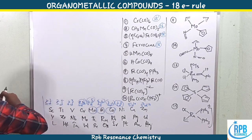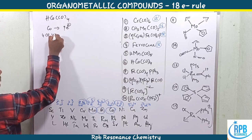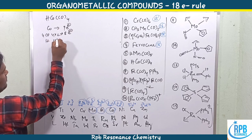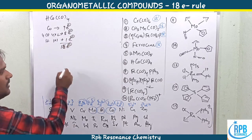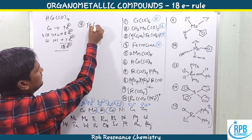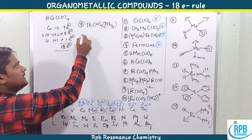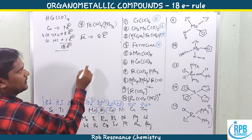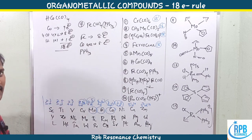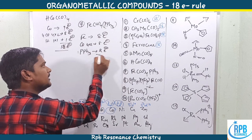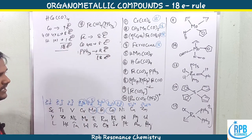The sixth example is HCo(CO)₄. Cobalt has s²d⁷ — 9 electrons. Four carbonyls: 4 × 2 = 8 electrons. One hydrogen: 1 electron. Total: 9 + 8 + 1 = 18 electrons. The seventh example is Fe(CO)₄(PPh₃). Iron — 8 electrons. Four carbonyls: 8 electrons. PPh₃ is a phosphine ligand with one lone pair, so it is a 2-electron donor: 2 electrons. Total: 8 + 8 + 2 = 18 electrons.